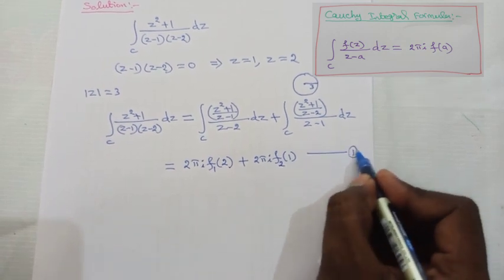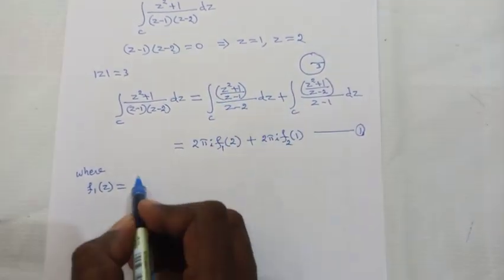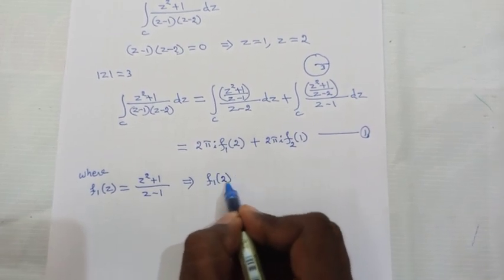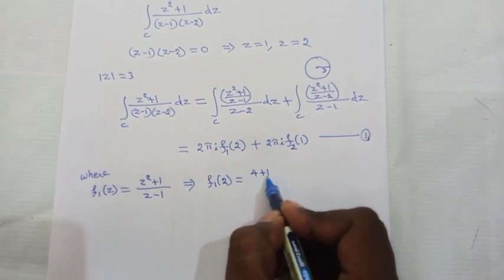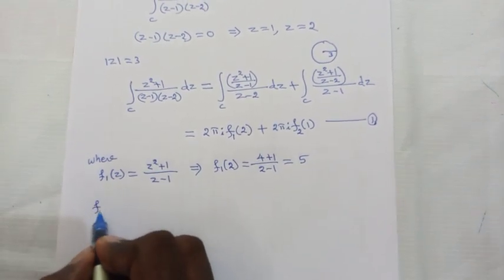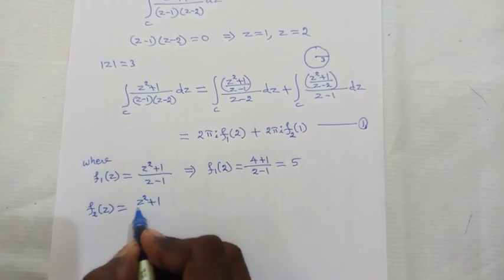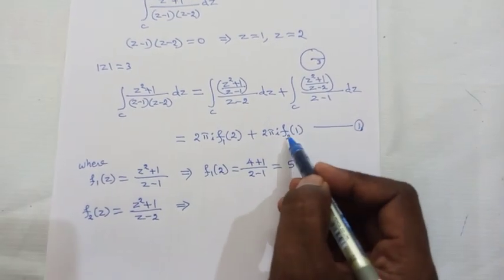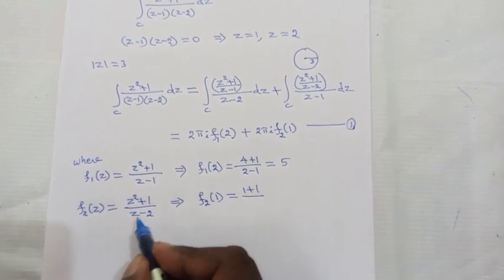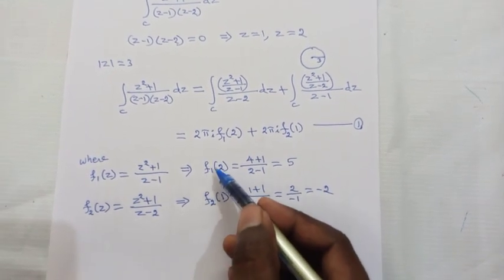Now we compute the required values. f₁(z) = (z² + 1)/(z - 1), so f₁(2) = (4 + 1)/(2 - 1) = 5/1 = 5. Next, f₂(z) = (z² + 1)/(z - 2), so f₂(1) = (1 + 1)/(1 - 2) = 2/(−1) = −2. We have now found f₁(2) = 5 and f₂(1) = −2.